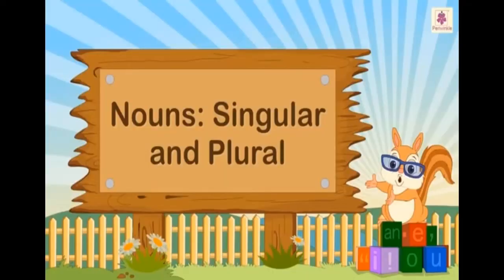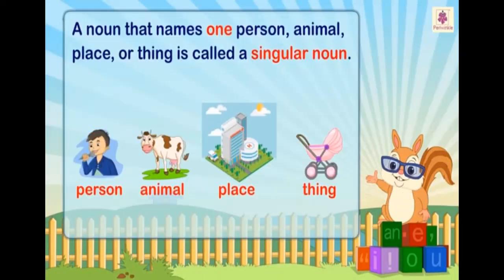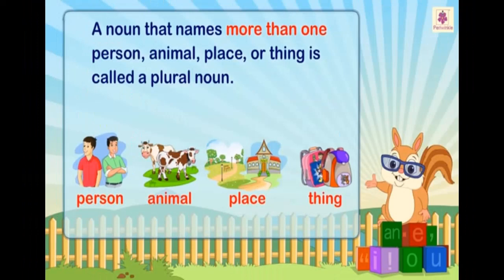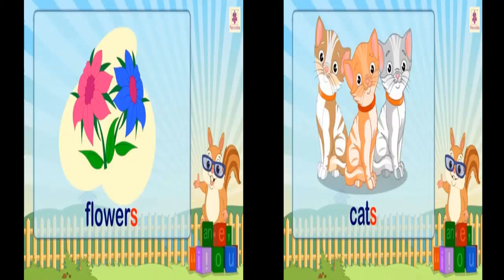Now we will learn about singular and plural nouns. A noun that names one person, animal, place or thing is called a singular noun — for example, a boy, a flower. A noun that names more than one person, animal, place or thing is called a plural noun — for example, flowers, cats.